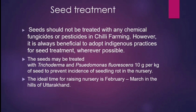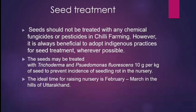Seed Treatment. Seeds should not be treated with any chemical fungicides or pesticides in Chilli farming. However, it is always beneficial to adopt indigenous practices for seed treatment wherever possible. The seeds may be treated with Trichoderma and Pseudomonas fluorescens at 10g per kg of seed to prevent incidence of seedling rot in the nursery. The ideal time for raising nursery is February to March in the hills of Uttarakhand.